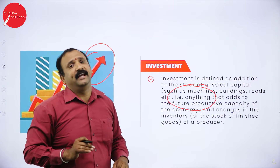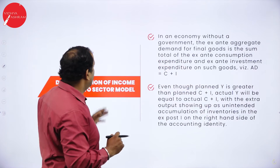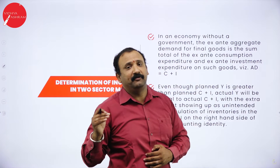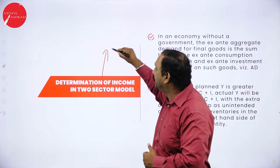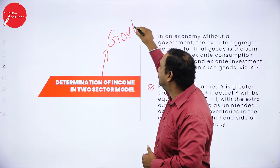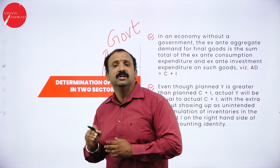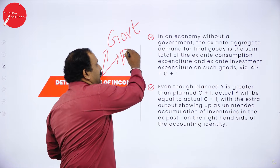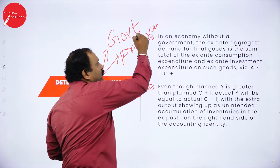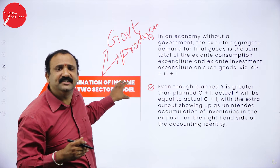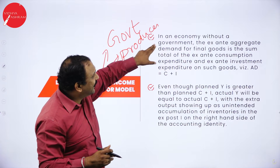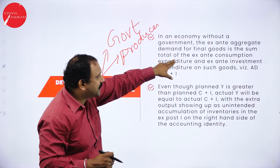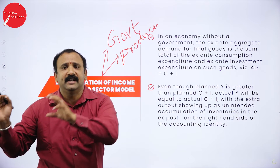Now, determination of income in a two-sector model. The two sectors are: sector one — the government — which runs and regulates the economy, and sector two — the producer. Let us understand how the income model works in an economy without a government. If the government is not there, then the ex-ante demand for final goods is the sum of total ex-ante consumption — there is only a producer and a consumer.